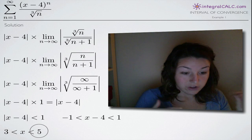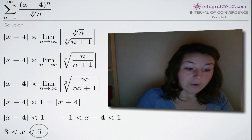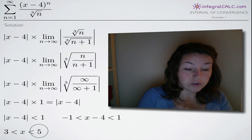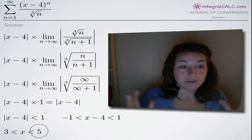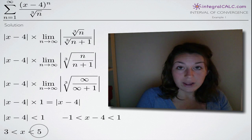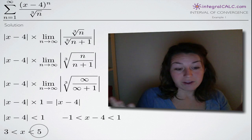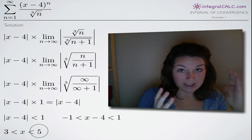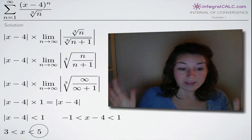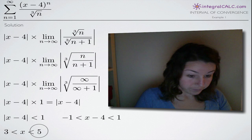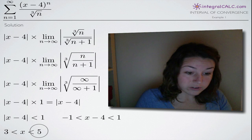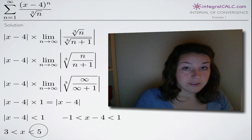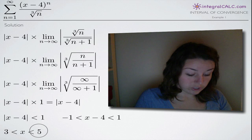So the series is on the range 3 to 5 — we know it converges between 3 and 5. We still have to check the endpoints 3 and 5 to determine whether the series converges at those exact points, and we do that by plugging 3 and 5 separately into our original function.